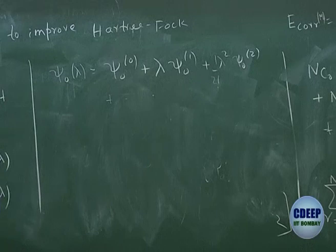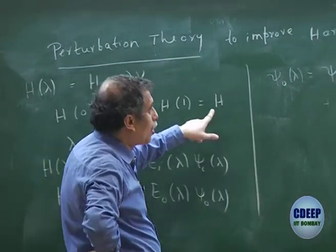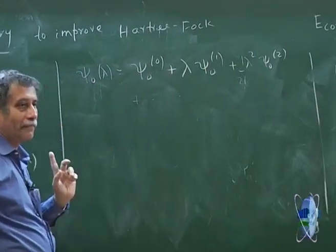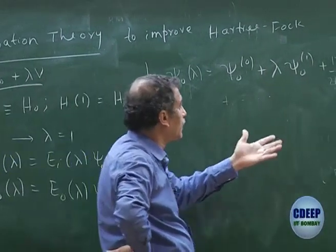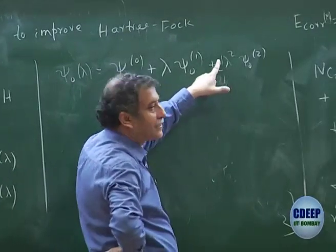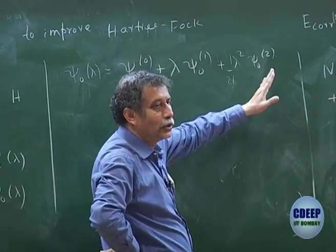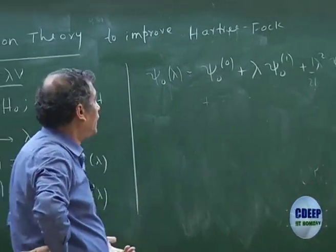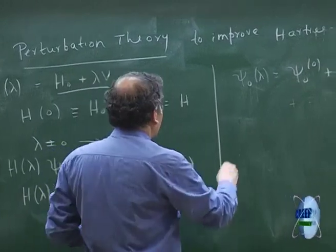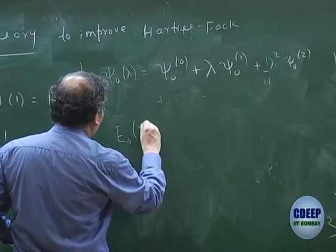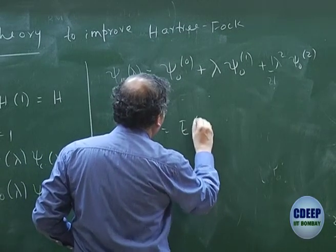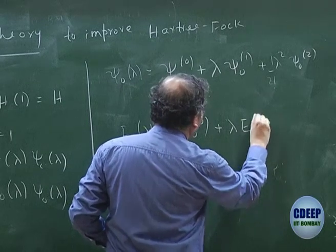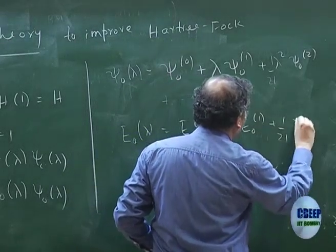Eventually my final solution is at λ = 1. Similarly, I can write E₀(λ) as a power series: E₀(λ) = E₀⁰ + λE₀¹ + ½λ²E₀² + ... Each of these are also derivatives of ψ₀ or the energy with respect to λ. The order corrections are basically derivative corrections. We put this into the Schrödinger equation for H(λ) and expand for the ground state.